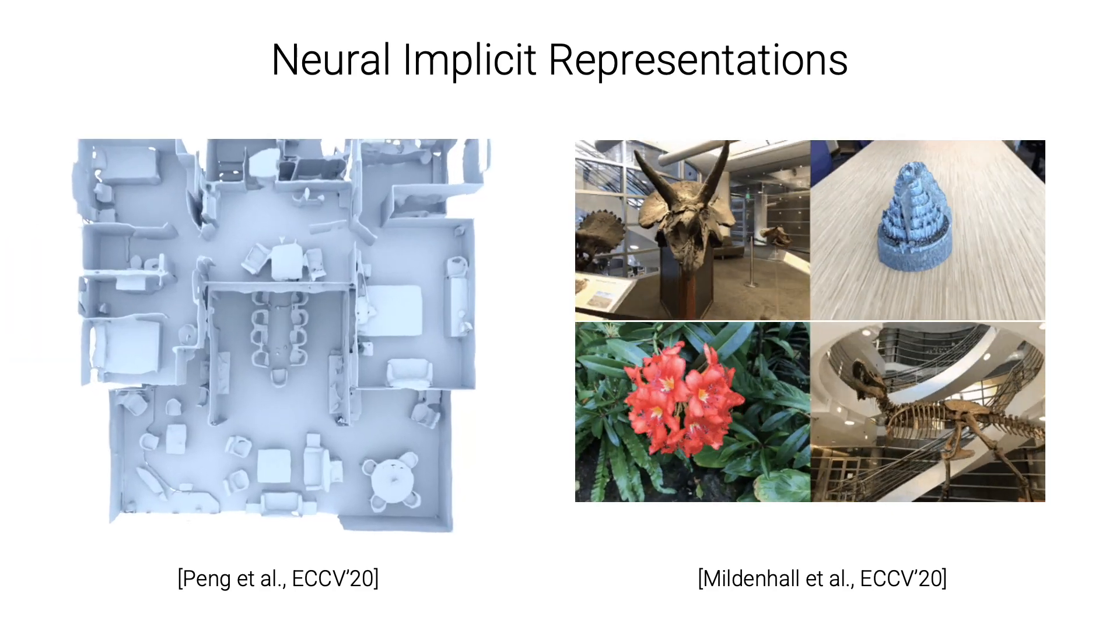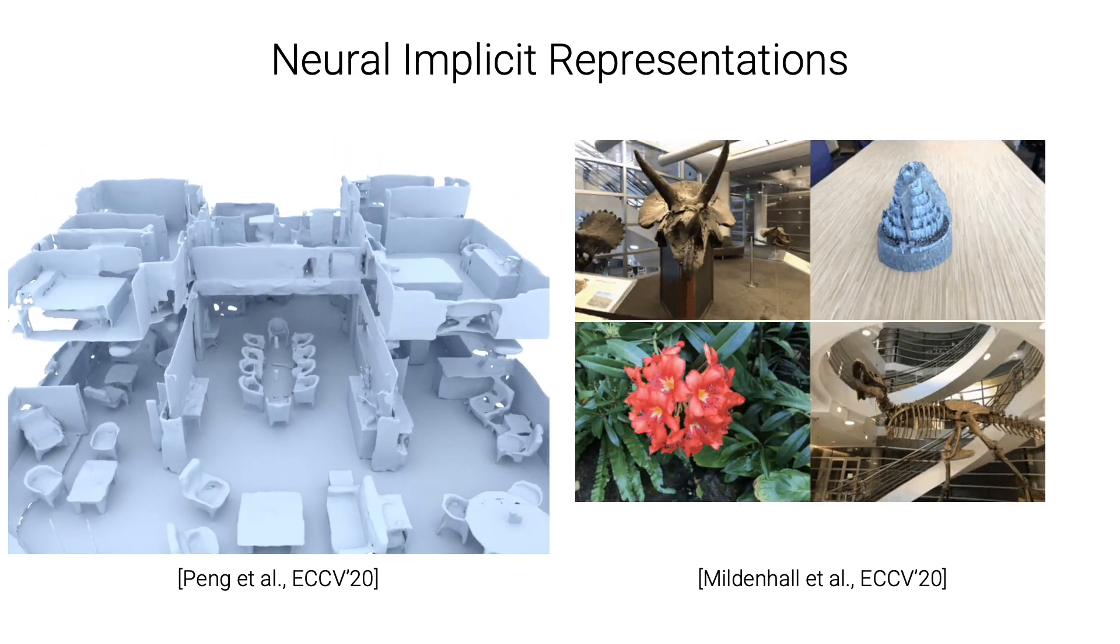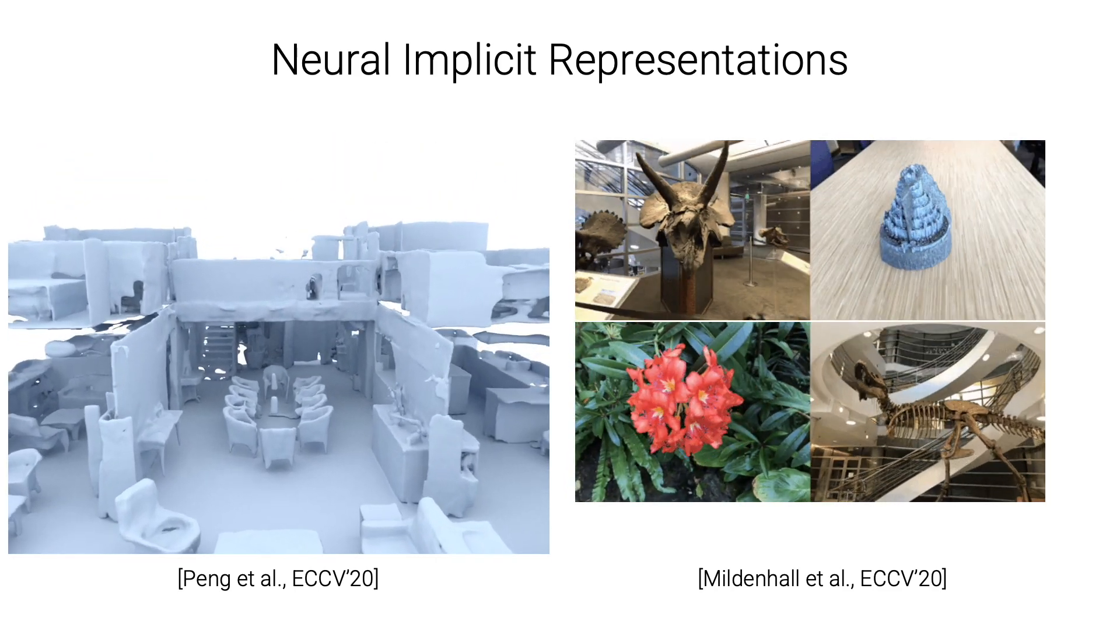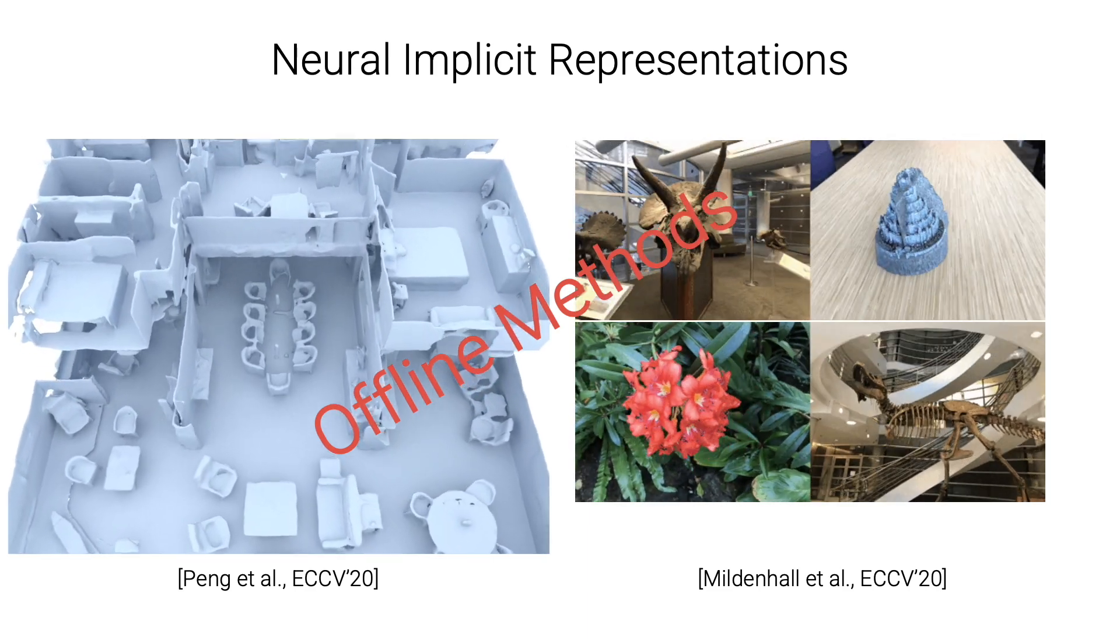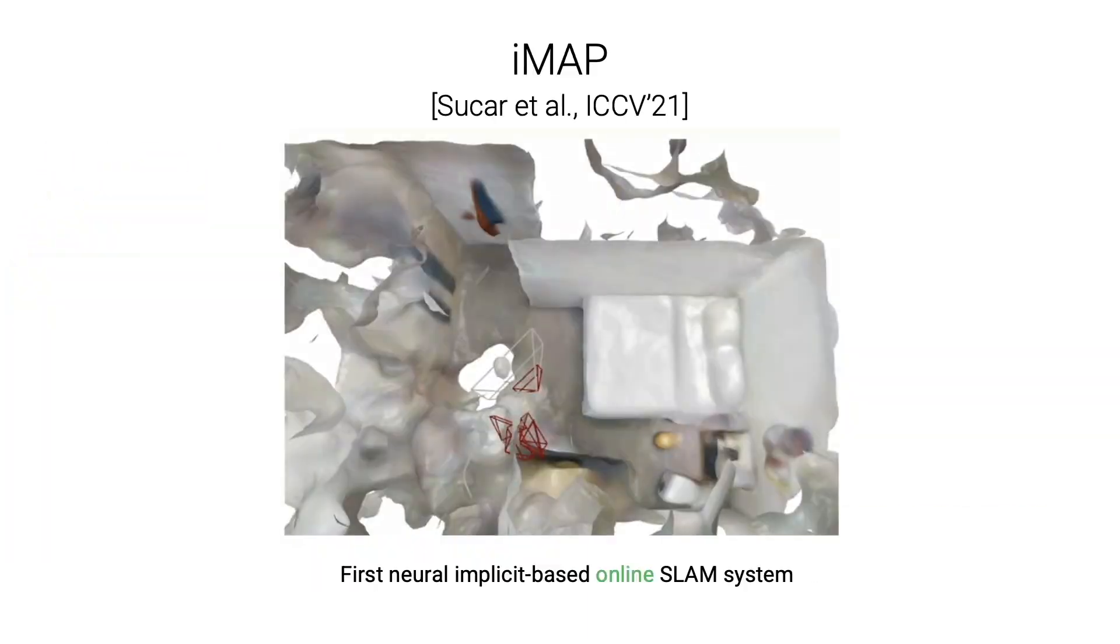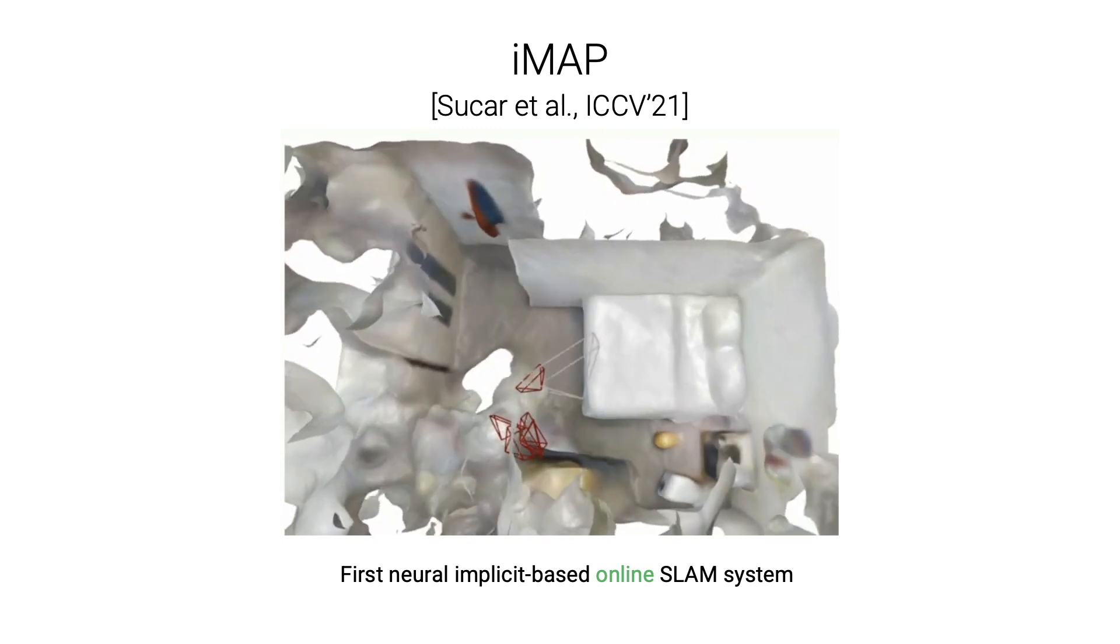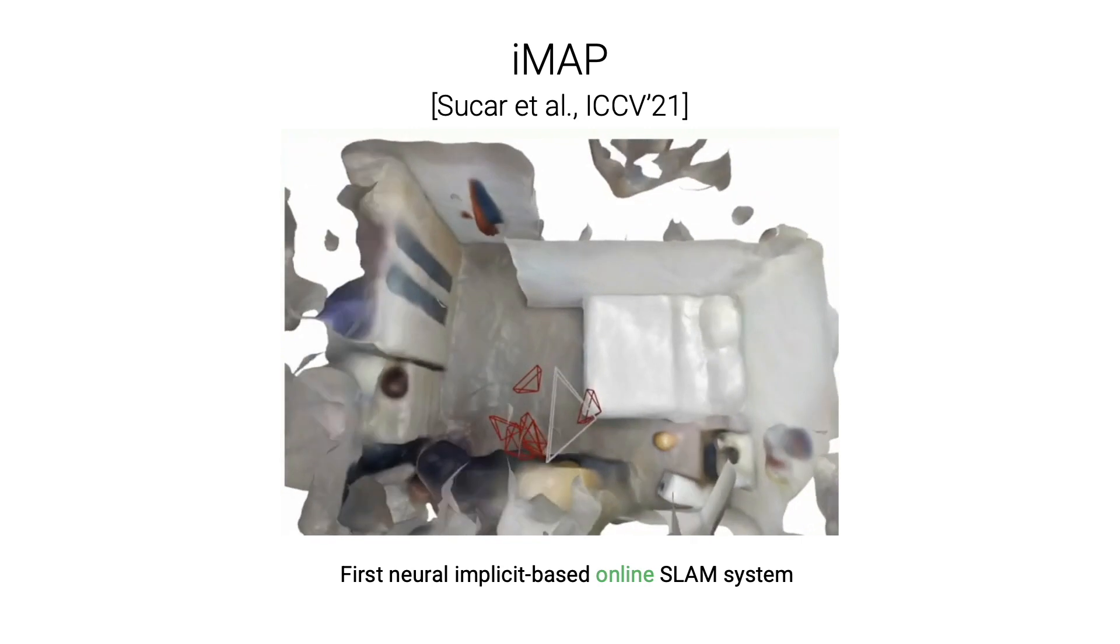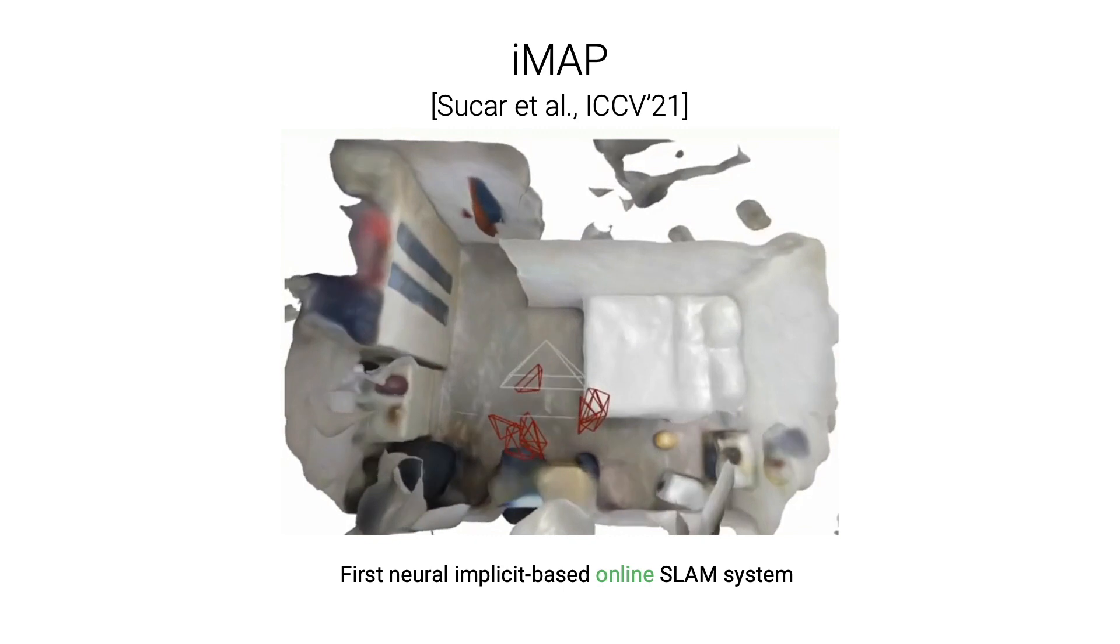However, almost all methods with such scene representations have been considered as offline tools, which usually need to train or optimize for hours or days. A recent work, IMAP, shows for the first time an online Slam system that uses a single multi-layer perceptron as the Neural Implicit Scene Representation.